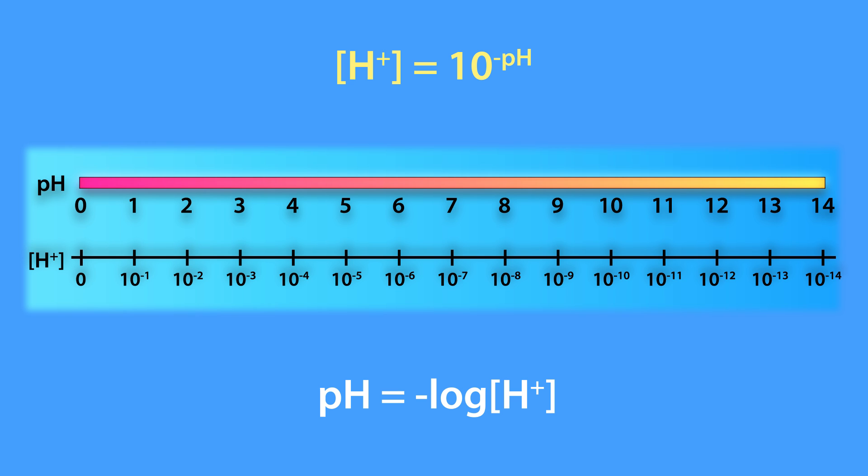For example, the hydrogen ion concentration of plasma with a pH of 7.4 equals 3.98 times 10 to the minus 8 molar.